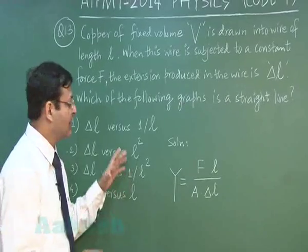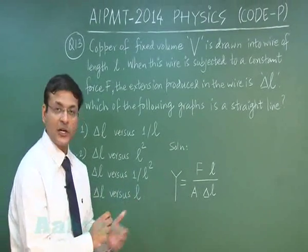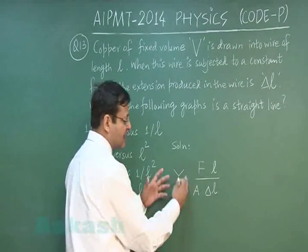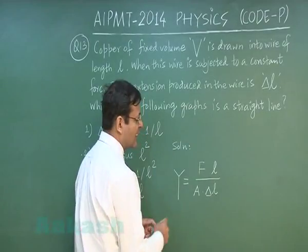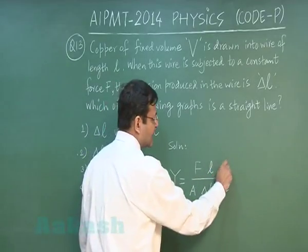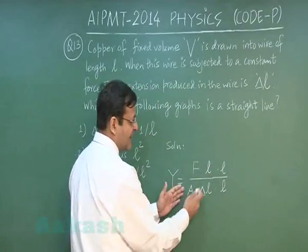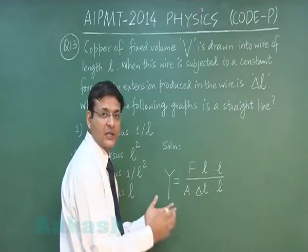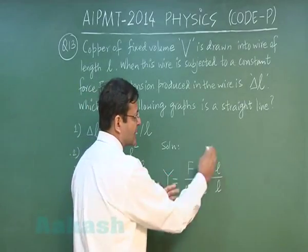Now see as they have given to you that the volume is constant and in the option you find that only L are appearing, the area is not appearing. That means I must eliminate this area. So for that matter what I do I multiply it by L here and another L here. So now this area into L that becomes volume that is a constant and upper side you get L square.